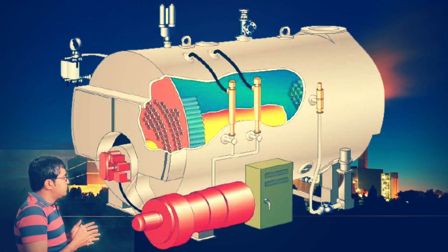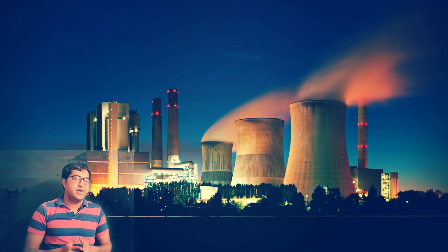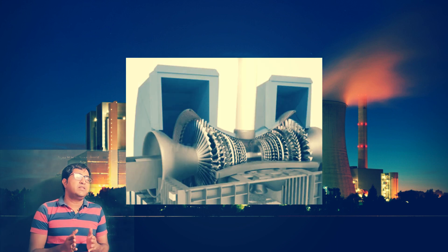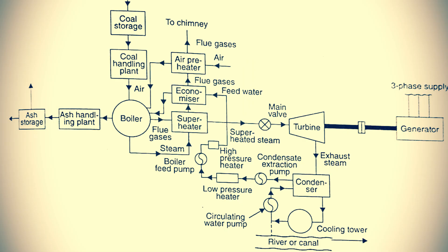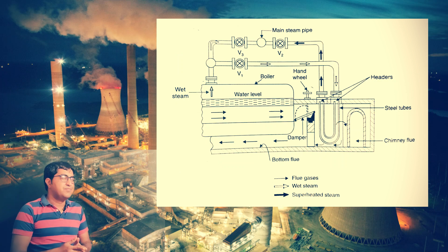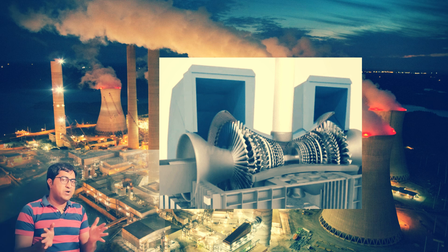Whatever steam is produced in the boiler — whether wet or dry steam — we cannot directly supply it to the turbine, because moisture content in the steam will erode and corrode the turbine blades. So this steam passes through the superheater. The superheater is located in a higher temperature range; it removes all the moisture from the steam and converts it into superheated steam.